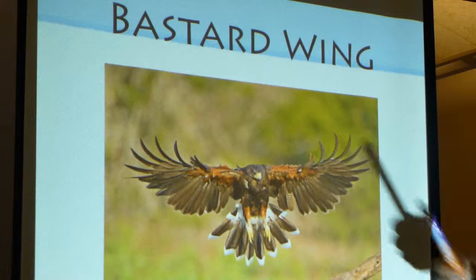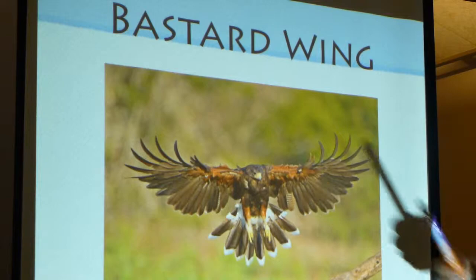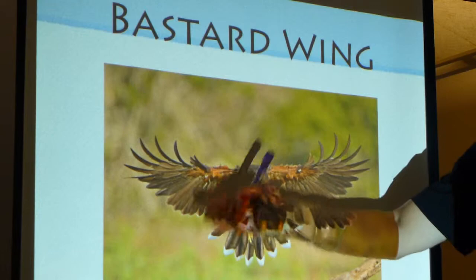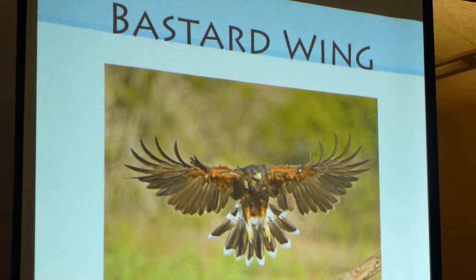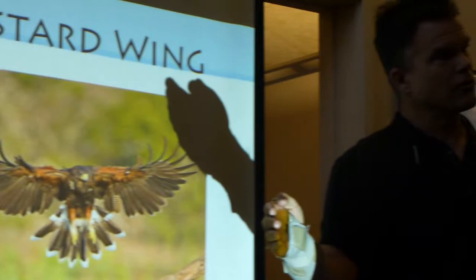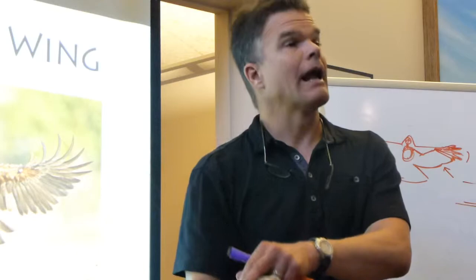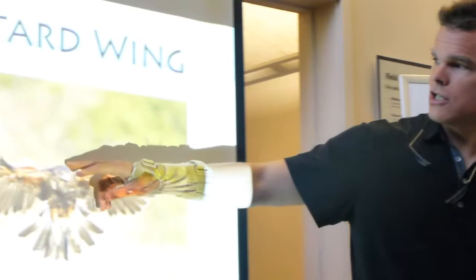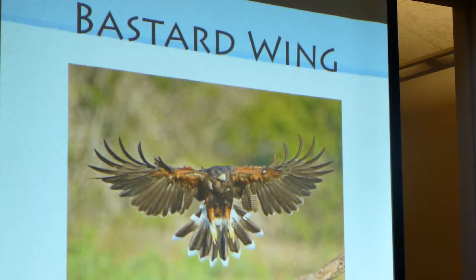Another name for it is the alula. Here's a bird coming in for a landing — it's got its wings dropped really low, in what's called a low angle of attack. You ever put your hand out the window and felt that lift? Then you bring your hand up like this and all of a sudden that lift drops off. You get your hand too steep, you lose your lift because of turbulence back here, and you fall. You can actually see the turbulence starting to happen on the back of this bird's wing.